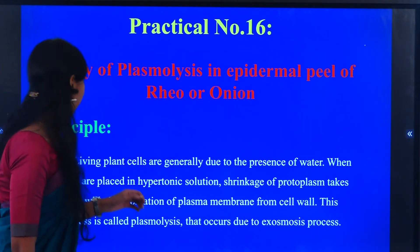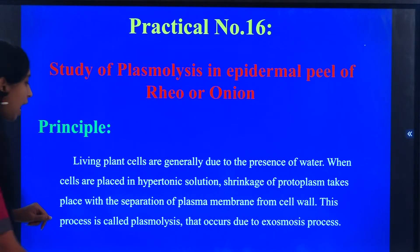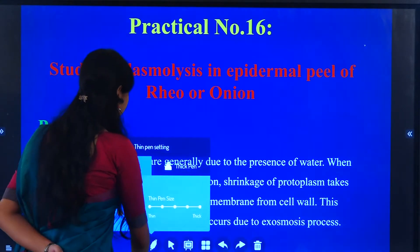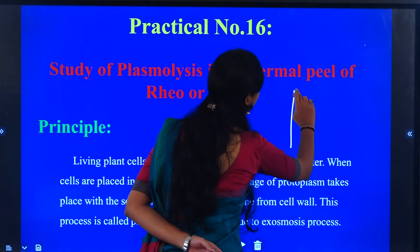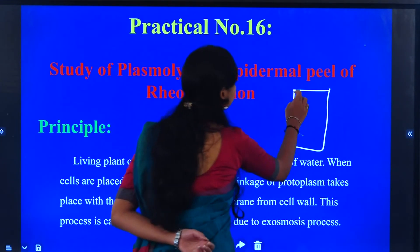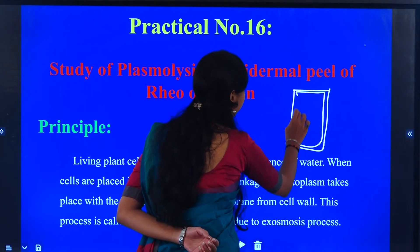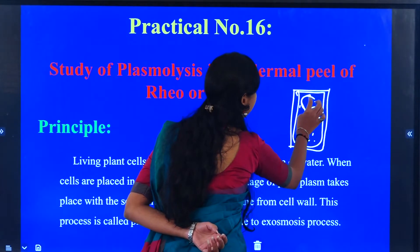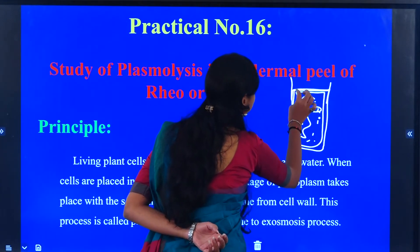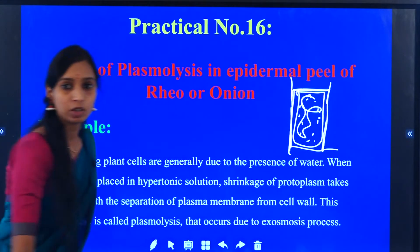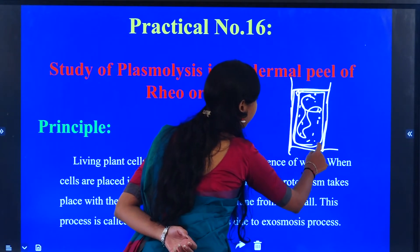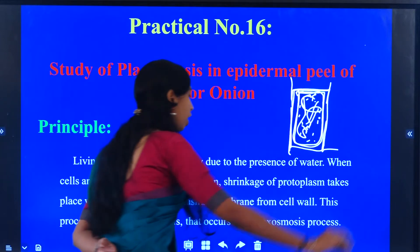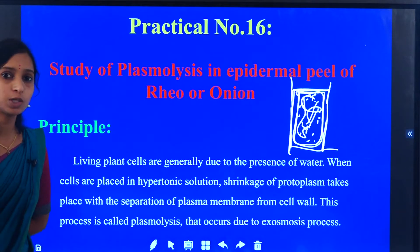The shrinkage of protoplasm takes place with the separation of plasma membrane and the cell wall. A plant cell has a cell wall, plasma membrane, and protoplasm present. This is the normal plant cell. When this plant cell is placed in a hypertonic solution, the protoplasmic content will shrink due to the exosmosis process.